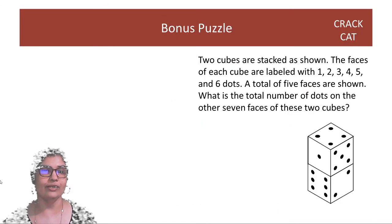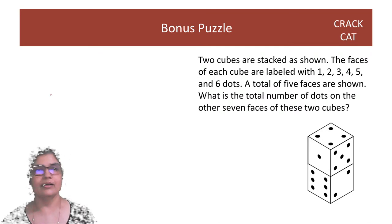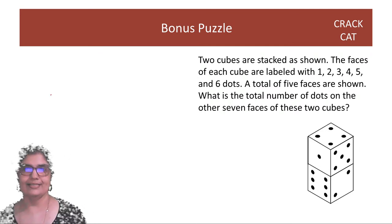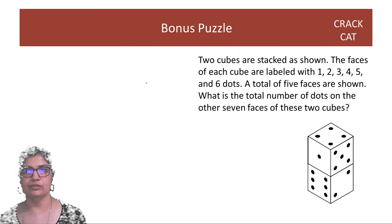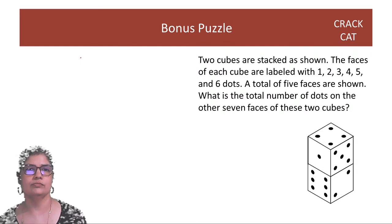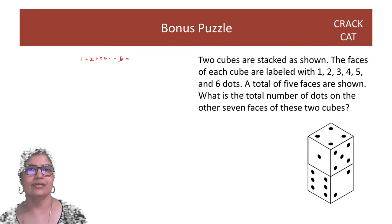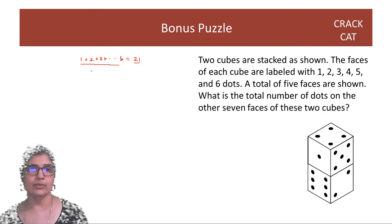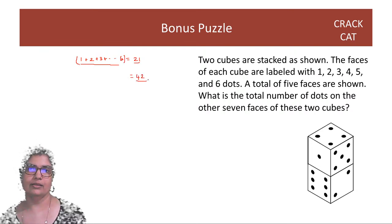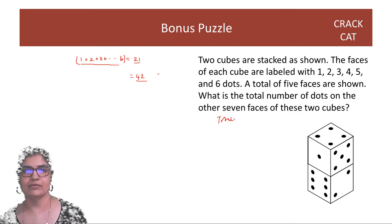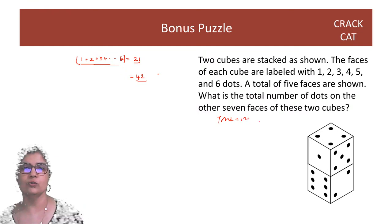Let's start with the puzzle from the morning. You have two cubes stacked. The faces of each cube are labeled 1, 2, 3, 4, 5, and 6 dots. The sum from 1 to 6 is 21, so one cube's sum is 21. The sum of two cubes will be 42, so we know the total of all 12 faces.